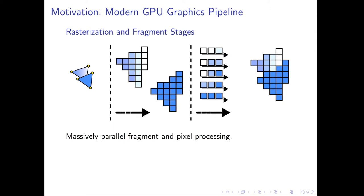Those pixels are written into the 2D raster and finally make up the raster image.